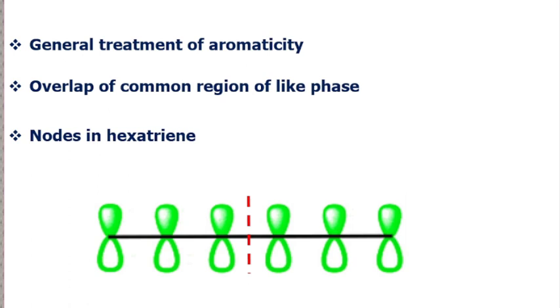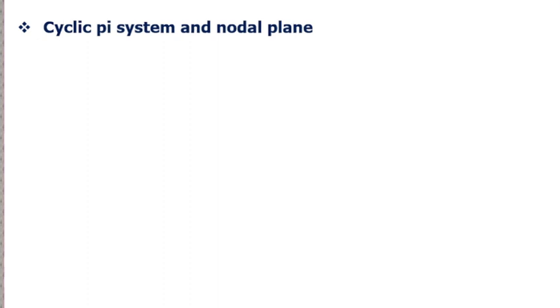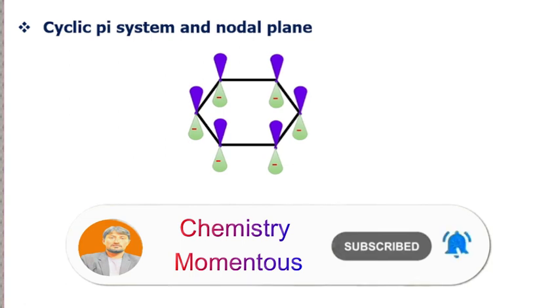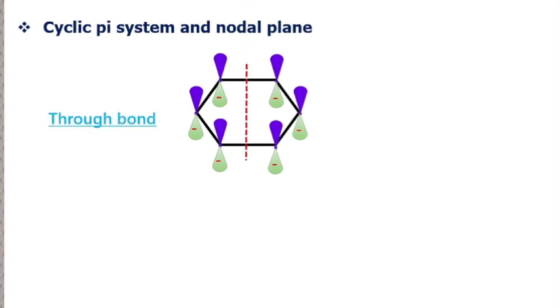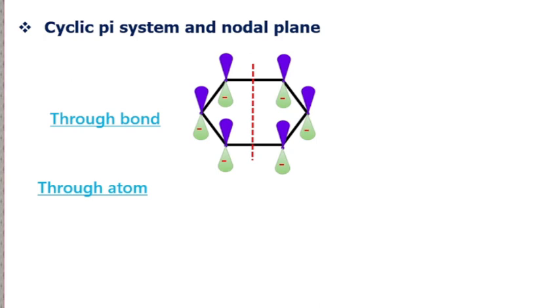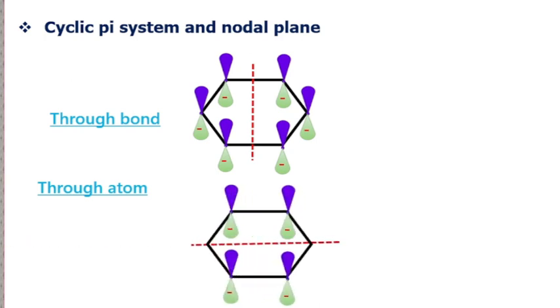Let us now look at the cyclic pi system and nodal planes in benzene. It is impossible to draw a cyclic pi system with just one node in the case of benzene. Instead, nodal planes are drawn. We can pass nodal planes through two places: through the bond, where the nodal plane cuts the structure into two symmetrical regions, or through the atom, where the orbitals of the atom at the corner are ignored and not represented.